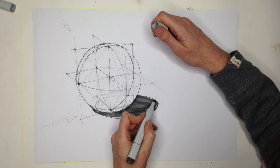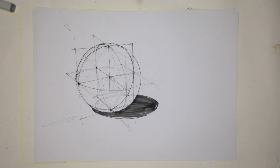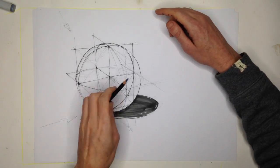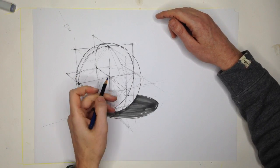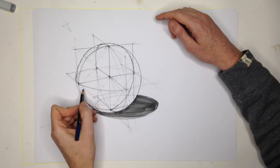Now for the form shadow, a ball shape is going to have, just like the moon when it's lit, half will be in the light and half will be in the shadow.